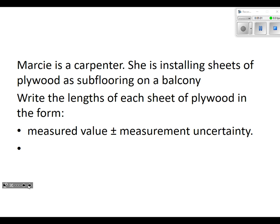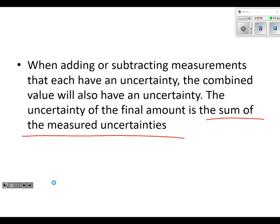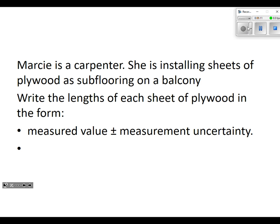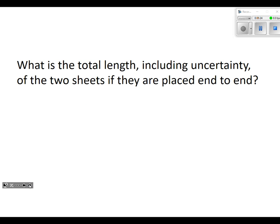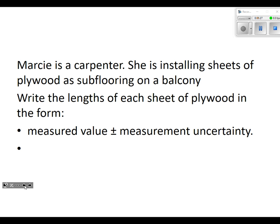Here's an example. Marcie is a carpenter. She's installing sheets of plywood as subflooring on a balcony. Write the lengths of each sheet of plywood in the form measured value plus or minus measurement uncertainty. What do you guys have? Sheet one, you guys have it, yes, okay good.